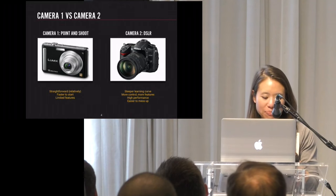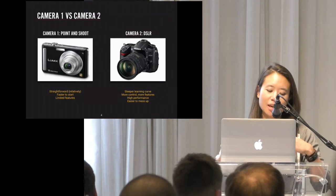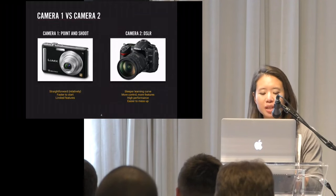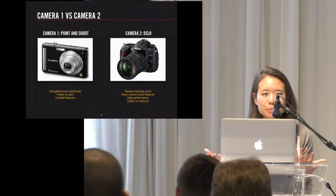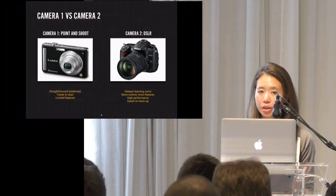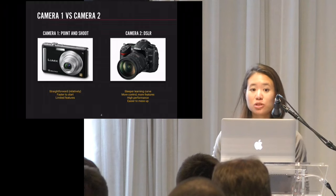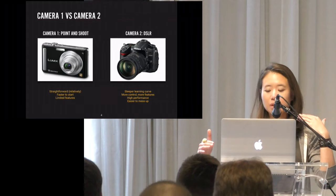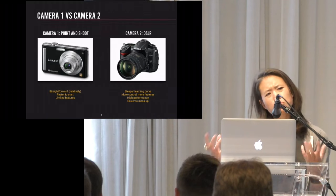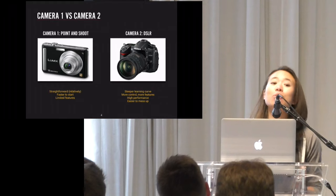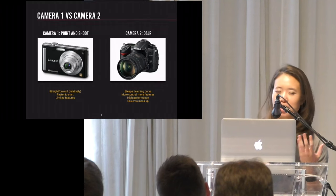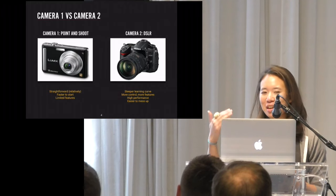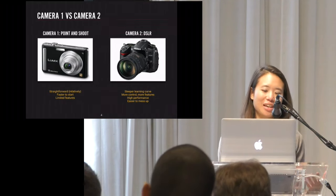At a very basic level, you can think of Camera 1 versus Camera 2 as like the difference between a point-and-shoot camera and a DSLR. A point-and-shoot camera is simple and really easy to pick up and get started. It might have limited features, might not take the best pictures, might not be that performant, but you don't have to be an expert at photography. A DSLR is a whole different animal — much more advanced, more controls, more features, but you kind of have to know what you're doing. The language is different: aperture, ISO, peaking level. The learning curve is steeper, and there is just a lot more room to mess up.